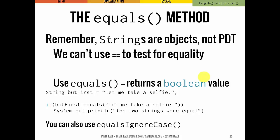One more method we often use is the equals method. Strings are objects, not primitive data types. So in the same way we might use the double-equals operator to test whether two numbers are equal, we can't do that for strings — we have to use the equals method. So if we do butFirst.equals("Let me take a selfie"), this actually turns out to be false, because the equals method is case sensitive — a capital L versus lowercase l throws it off. There's also a method called equalsIgnoreCase, and if you do butFirst.equalsIgnoreCase("let me take a selfie"), you'll end up getting true.